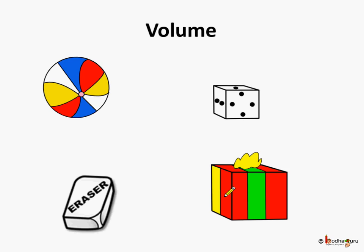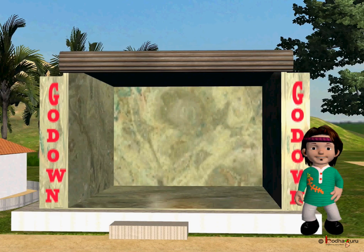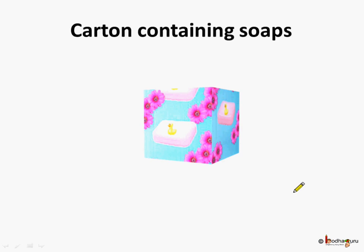Now let us try to find the volume of a cuboid. This is a big godown of Chaman. Now what does he store in the godown? He stores a carton containing soaps. This is a carton containing soaps, and he stores many such cartons in the godown.